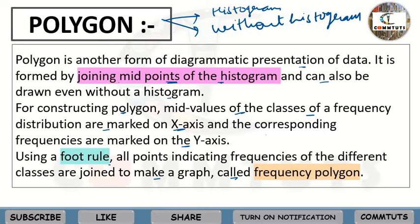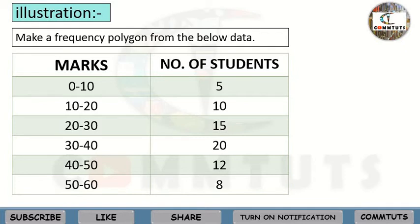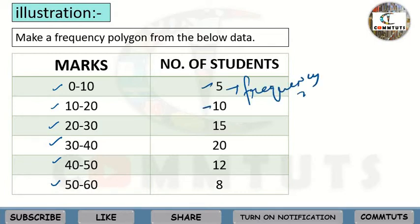Let's learn how to construct the polygon. You have a question where you have to make a frequency polygon from the below data. The marks are given as 0 to 10, 10 to 20, 20 to 30, 30 to 40, 40 to 50, and 50 to 60. The corresponding number of students (frequency) is: 5, 10, 15, 20, 12, and 8.